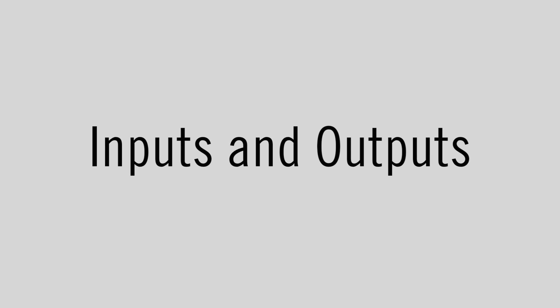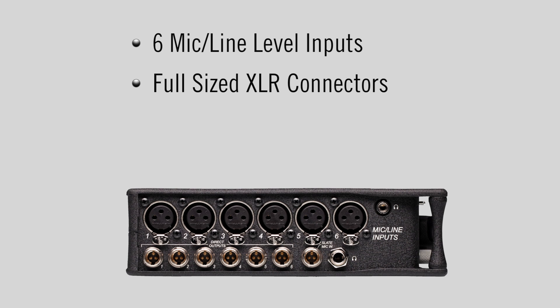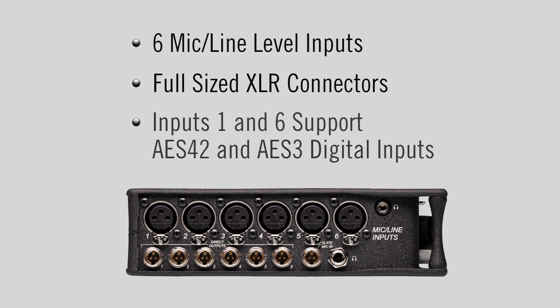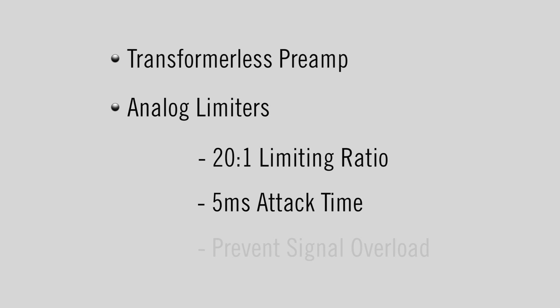The Sound Devices 664 field production mixer accepts 6 mic or line level signals on full-sized XLR connectors. Inputs 1 and 6 support AES42 and AES3 digital inputs. These inputs use a transformerless preamp design with integrated analog limiters. These fast-acting limiters, with their 20 to 1 ratio and 5 millisecond attack time, prevent signal overload, keeping the analog inputs free from distortion.